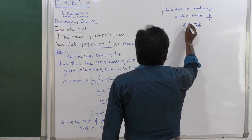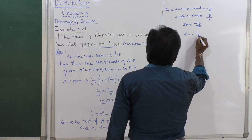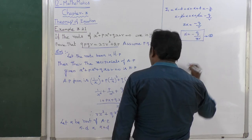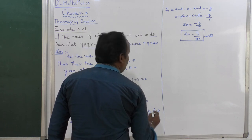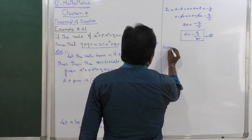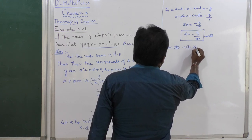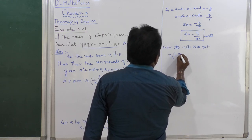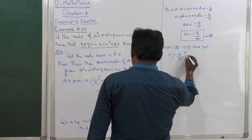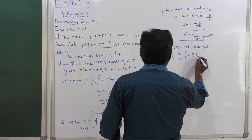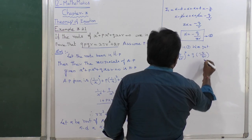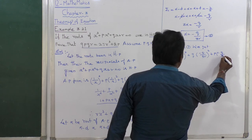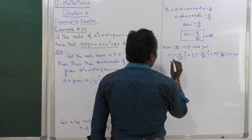So α = -q/(3r) from equation 1. Now substituting α into the AP equation (equation 2 in 1): r·(-q/3r)³ + q·(-q/3r)² + p·(-q/3r) + 1 = 0. The first term gives -rq³/(27r³), and the second term gives q³/(9r²).